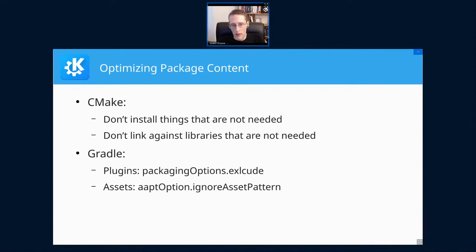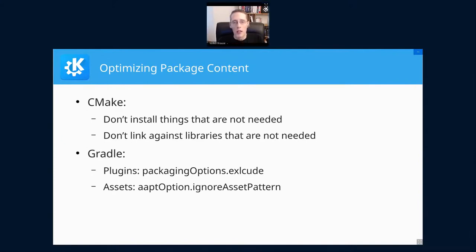The second thing to look at is: do not link in stuff you don't need, both for your application and for your dependencies. The common offender for that is Qt Widgets — a fairly large library where a lot of other libraries have optional dependencies on it, so just by being present they end up linking against it. We have meanwhile addressed that for Qt SVG, Qt Quick Controls, and KNotification, which are common dependencies of our applications. Those will no longer drag in Qt Widgets. But you might encounter that in other dependencies, and it's usually a smaller build system change to resolve it.